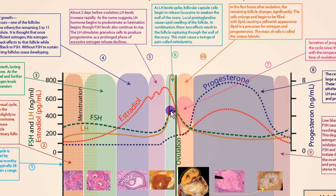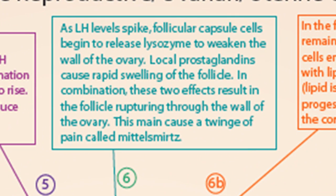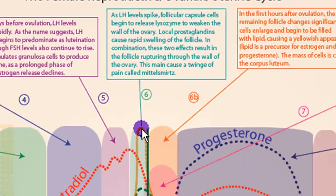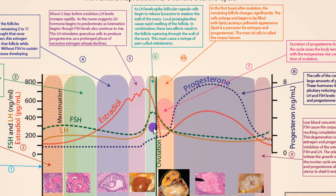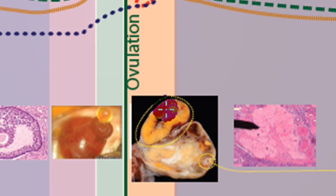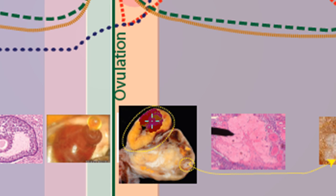The LH surge is also the major stimulus for ovulation — without luteinizing hormone there is no ovulation. FSH is on the rise as well, but not nearly as much as LH. As LH hits its peak, cells in the follicle around the oocyte begin to release lysozyme and also release prostaglandins that cause swelling in the oocyte. Those two combine to push the egg out in ovulation. In the first hours after ovulation, the remaining cells that surrounded the oocyte change rapidly and develop into something called the corpus luteum, which can take on almost half the size of the ovary.